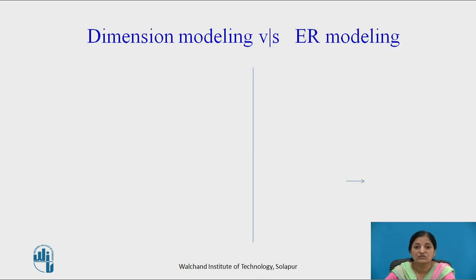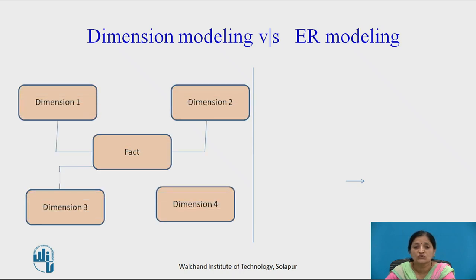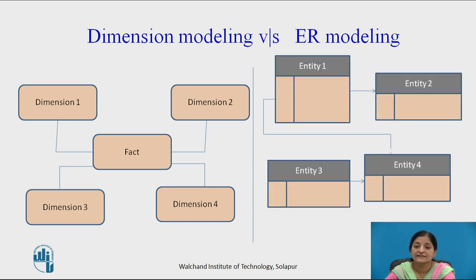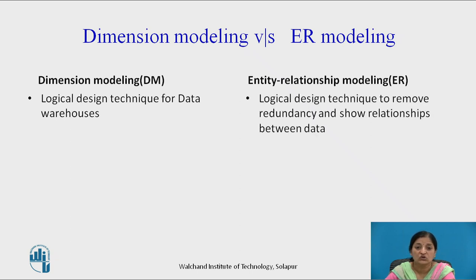Let's compare dimensional modeling with ER modeling. Dimensional modeling stores data in facts and dimension tables, whereas ER modeling is a graphical modeling technique that shows data in terms of entities and their relationships. Dimension modeling is a logical design technique used for data warehouses, while ER modeling is also a logical design technique but used to remove redundancy and show relationships between data.